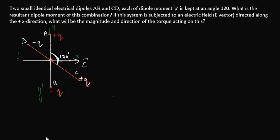Two small identical electrical dipoles AB and CD, each of dipole moment p, is kept at an angle 120 degrees. What is the resultant dipole moment of this combination if this system is subjected to an electric field E directed along the positive x direction? What will be the magnitude and direction of the torque acting on this?